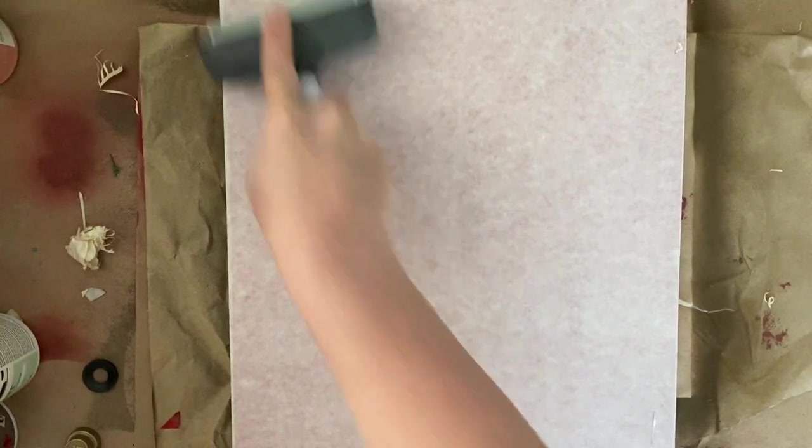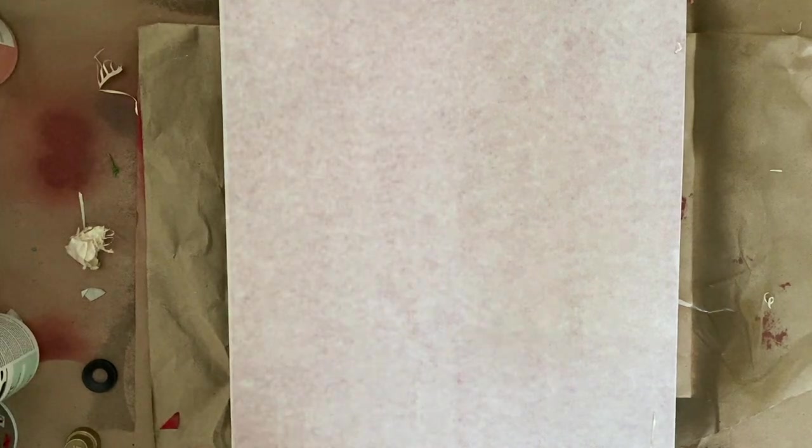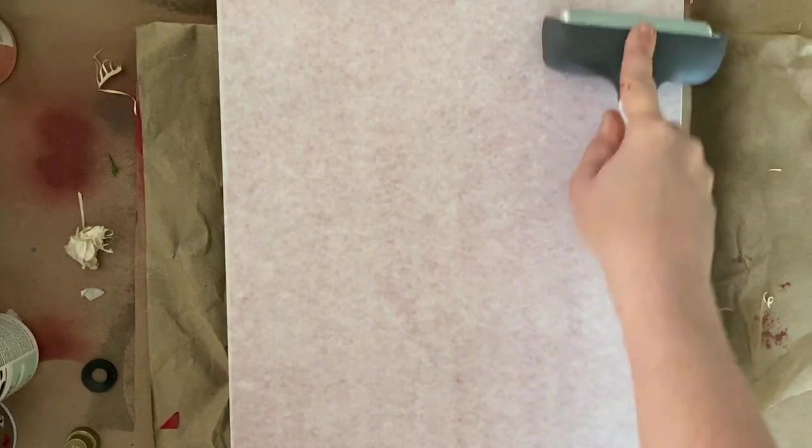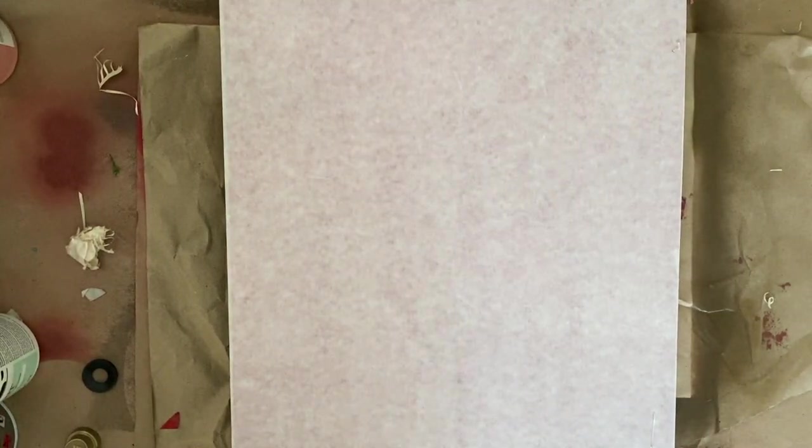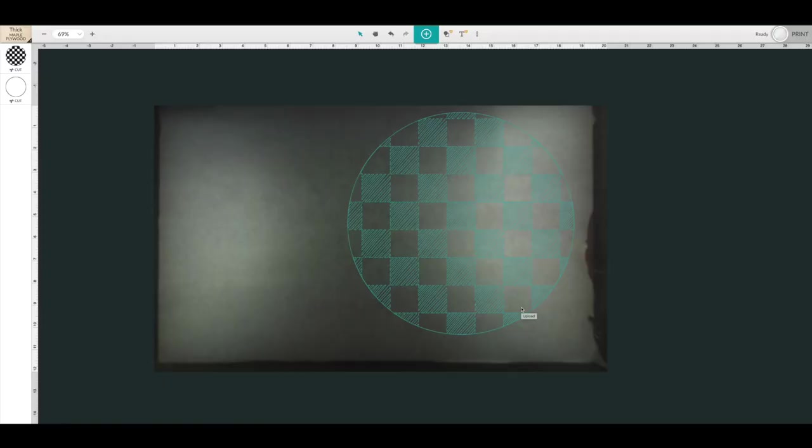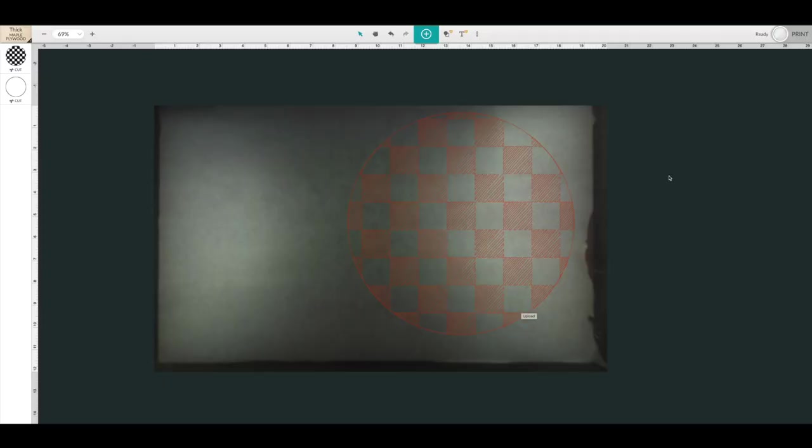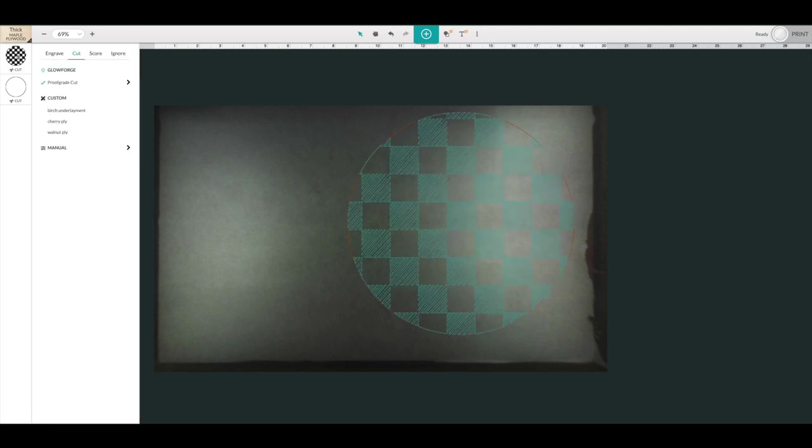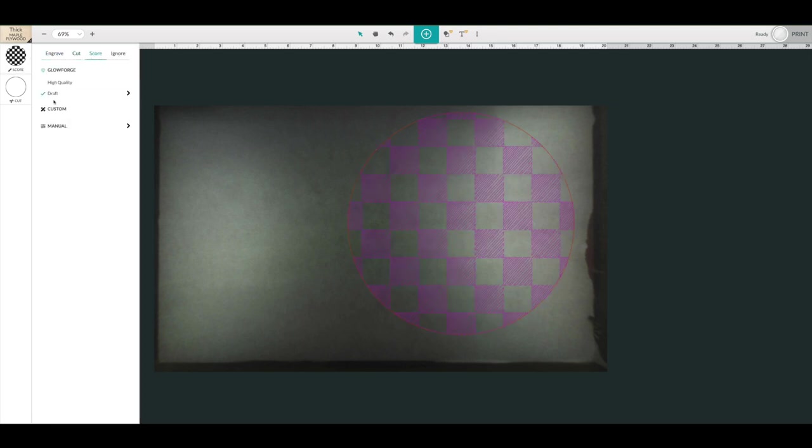And let's go set up the file in the Glowforge and get a cut. Open in the Glowforge. First thing we want to do, I actually have a quarter inch plywood, the Purebond maple in the Glowforge right now. So I'm going to use thick plywood. We are going to score just using draft setting for the pattern.